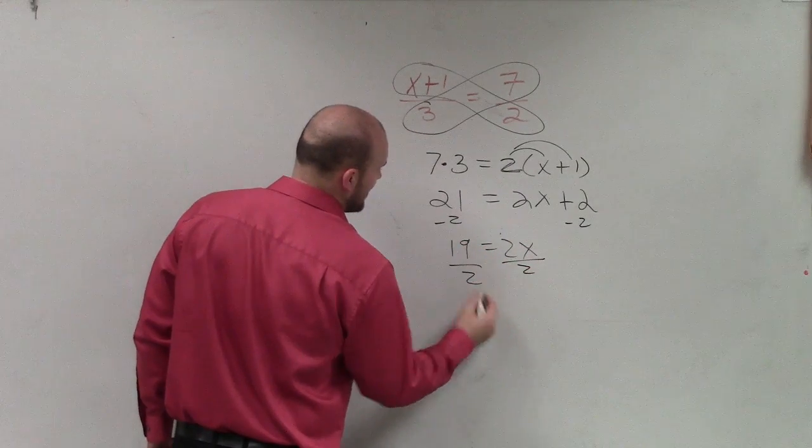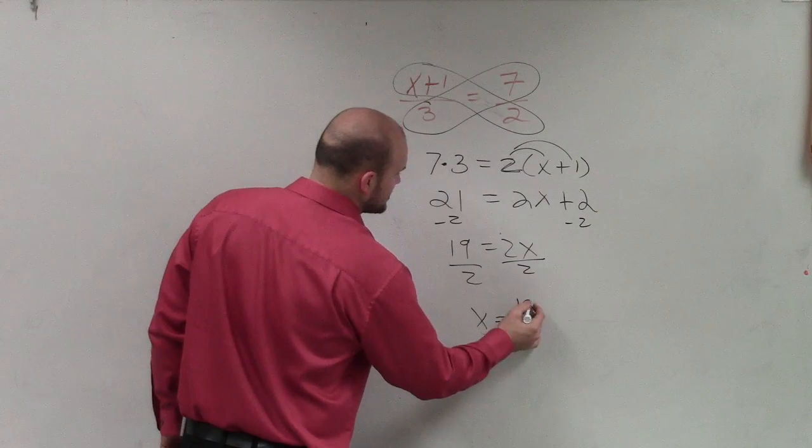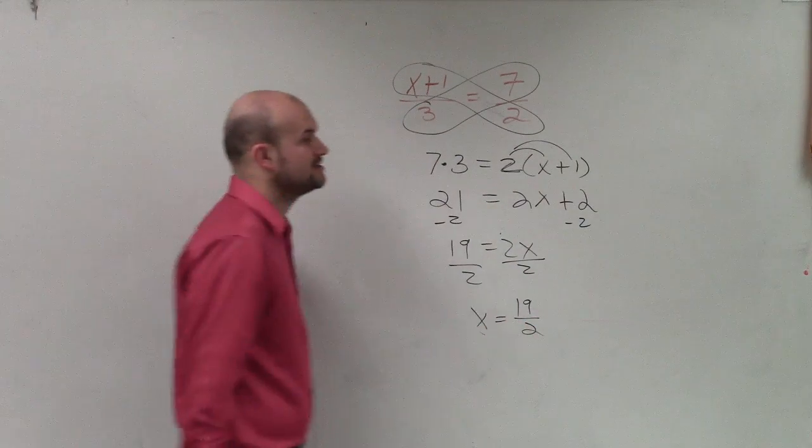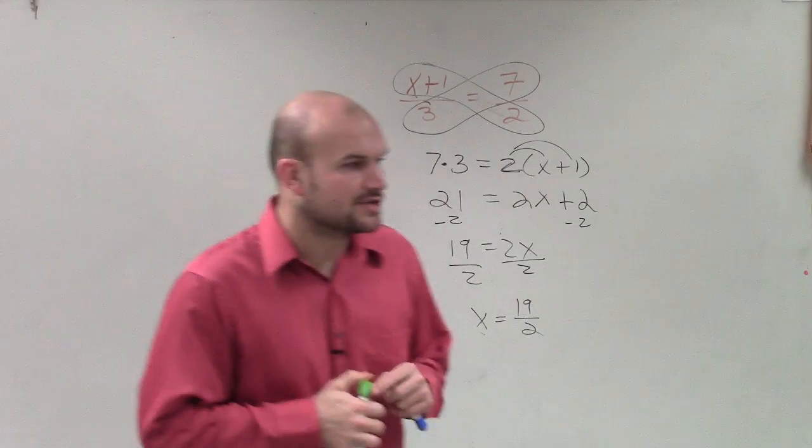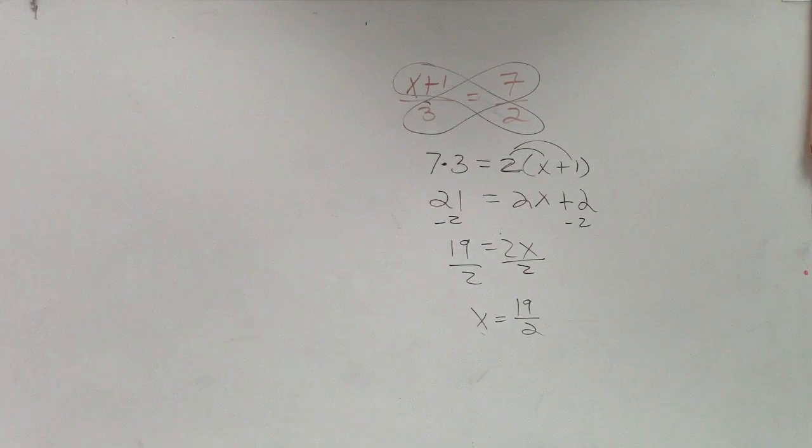Divide by 2, divide by 2, x equals 19 divided by 2. And I'll just leave it as a fractional answer, OK? So if you got that exactly correct.